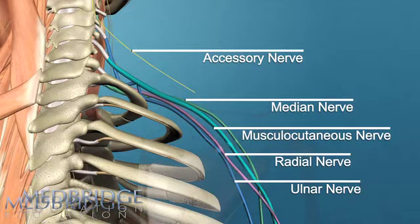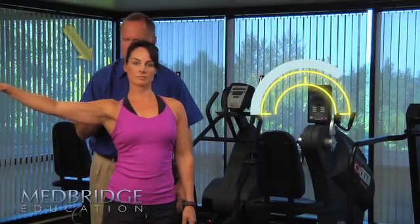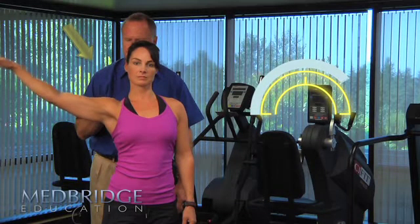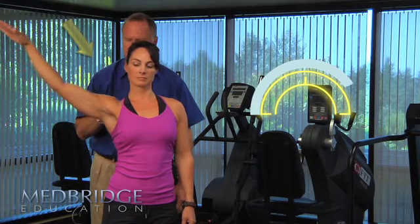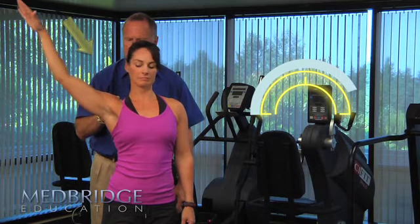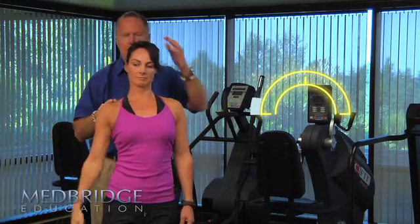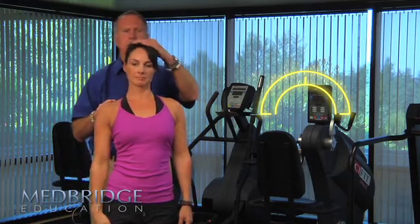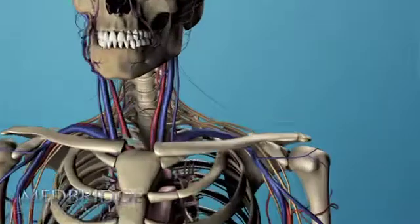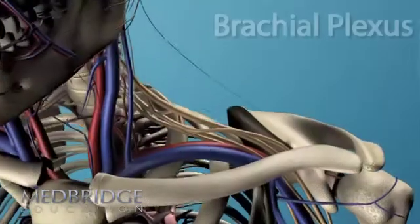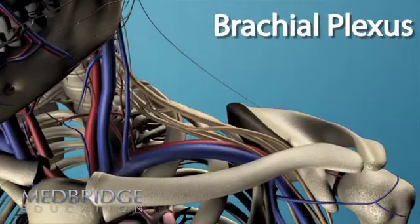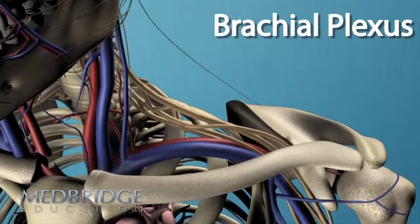The upper limb tension tests, or ULTT, as pioneered by Bob Elvey, will be illustrated in this course. Beyond these tests and crucial to correct diagnosis, Bob's four other well-documented criteria for the assessment of these syndromes will be emphasized and clearly demonstrated.